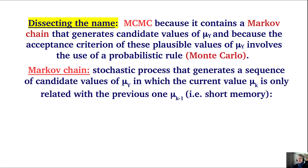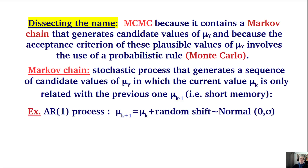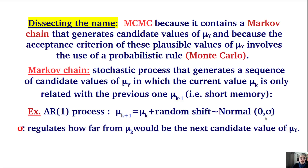The Markov chain is a stochastic process generating a sequence of candidate parameter values where the current value is only a function of the previous one. The simplest Markov chain is an autoregressive process of first order, where mu_{k+1} is a function of the previous value plus a random shift — a number drawn from a normal distribution with mean zero and standard deviation sigma. This standard deviation regulates how far from the current value the next candidate will be.